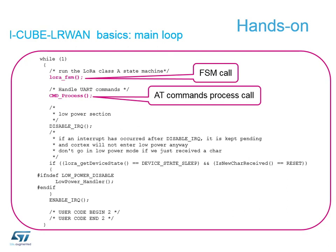This is the while(1) loop in main.c. We have our lora_fsm call - that's the call to our LoRa state machine doing the process of what we're doing - and under that we have our command process managing our AT commands. Every time we receive an AT command we load it into our LoRa state machine to do whatever we want - send a message out, join the network, whatever else.